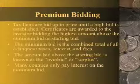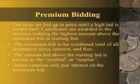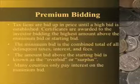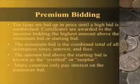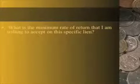If you have a $1,000 lien paying an 18% rate of return and you bid that lien up to $2,000, and the county does not pay interest on the overbid — only on the initial amount — then because you paid $2,000 for a $1,000 lien, your actual rate of return was cut in half from 18% down to 9%, because you're not making any return at all on half of your money. That's something important to consider with any premium bidding system.